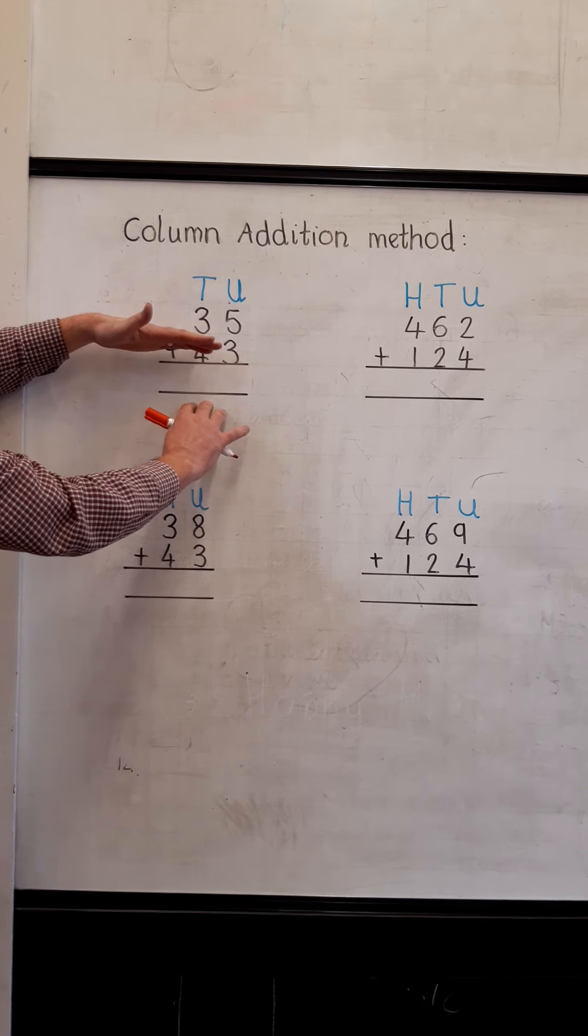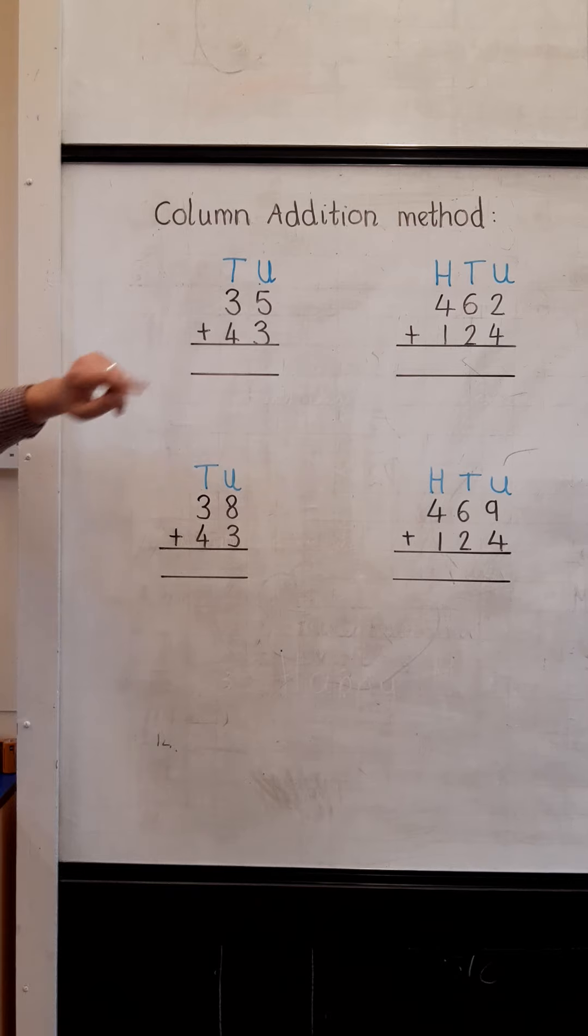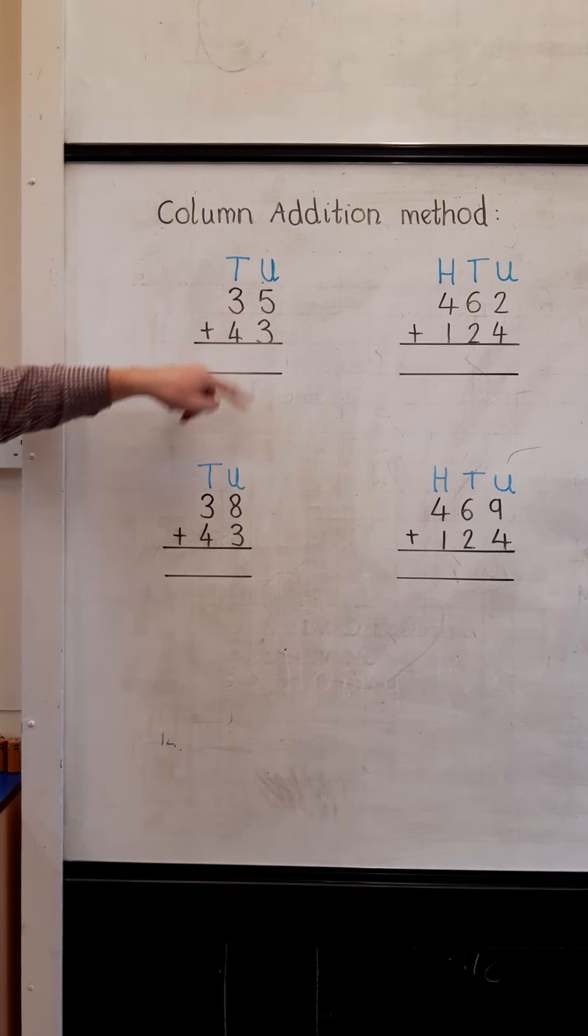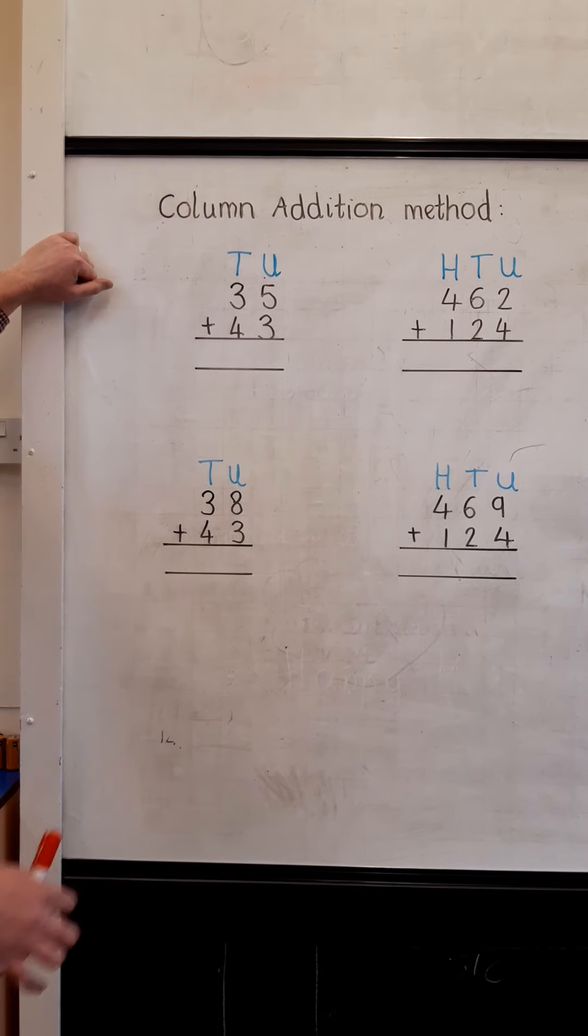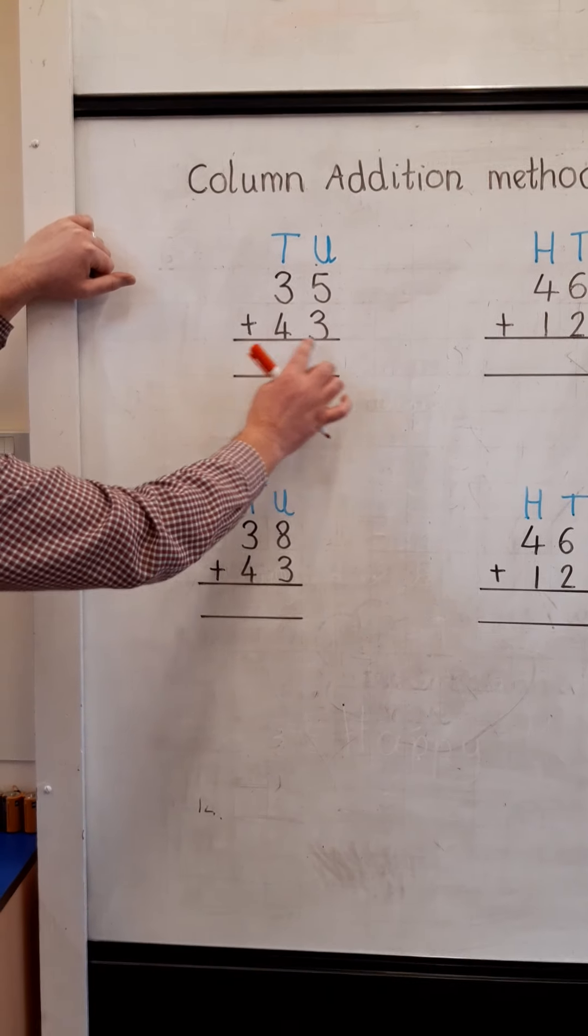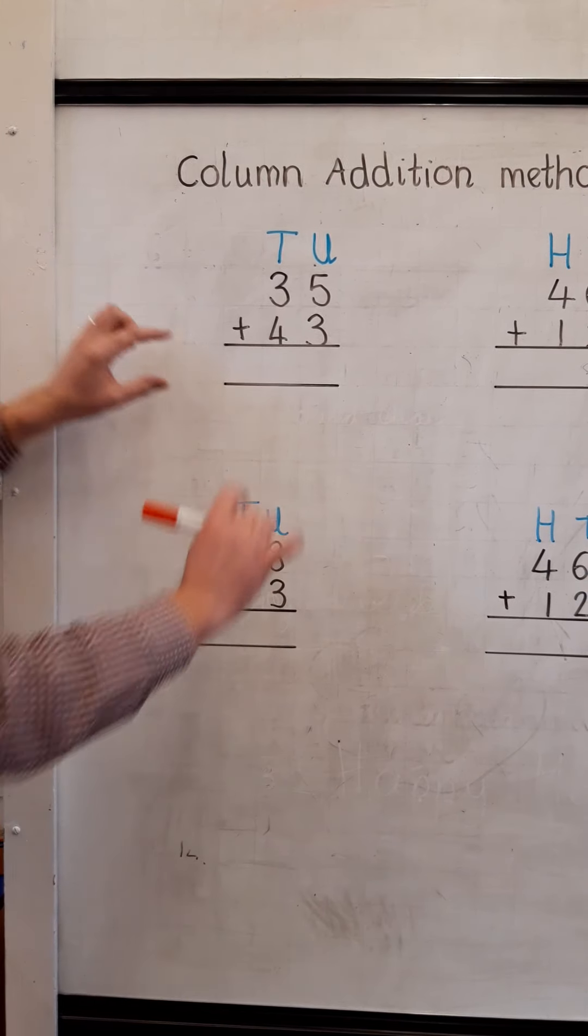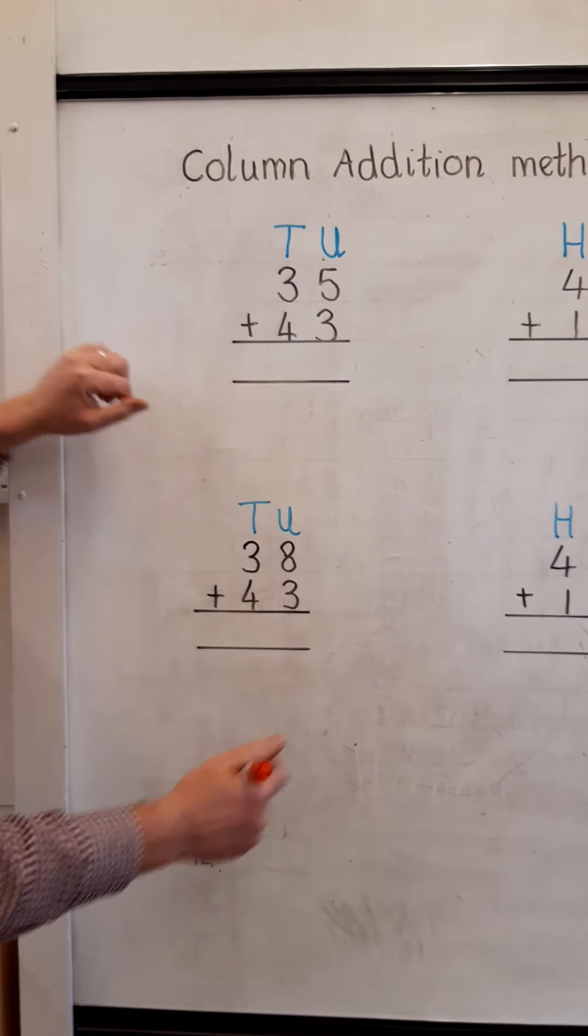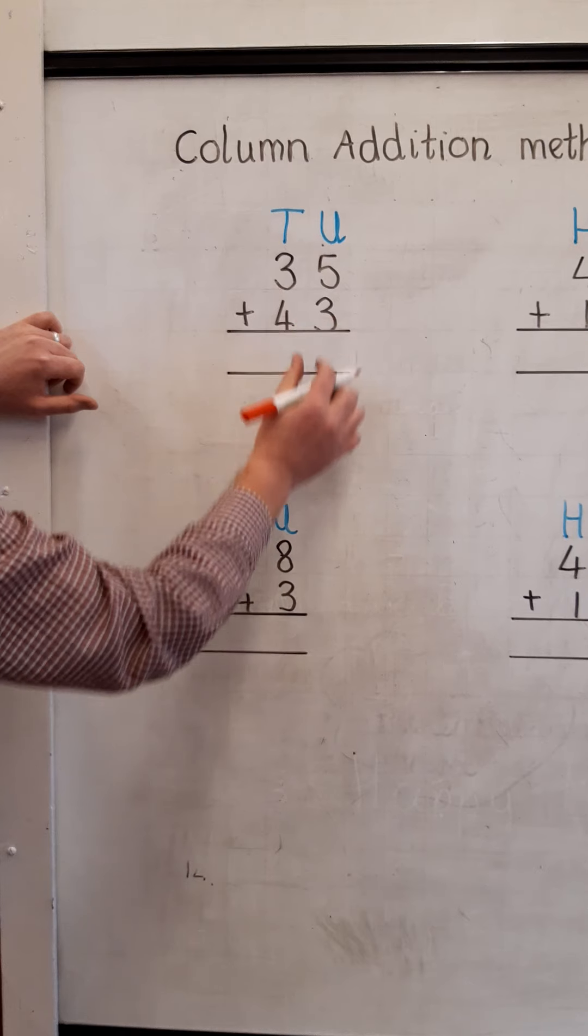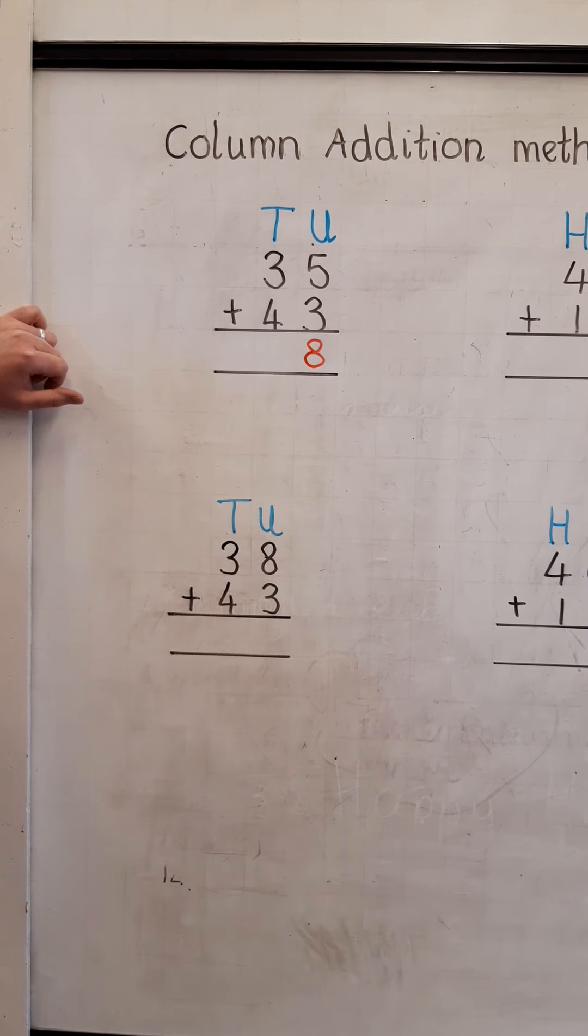And we start with the units place as we always do, we start with the smallest place, the units place. And we very simply have five units and three units makes a total of eight units, and inside our equals box we're going to write inside the units place eight, a total of eight units.